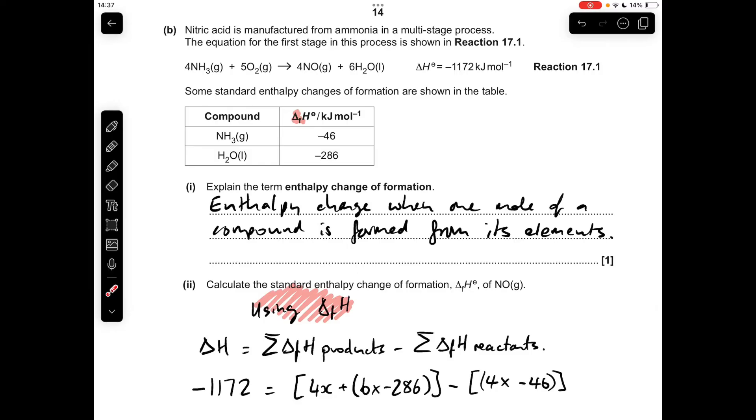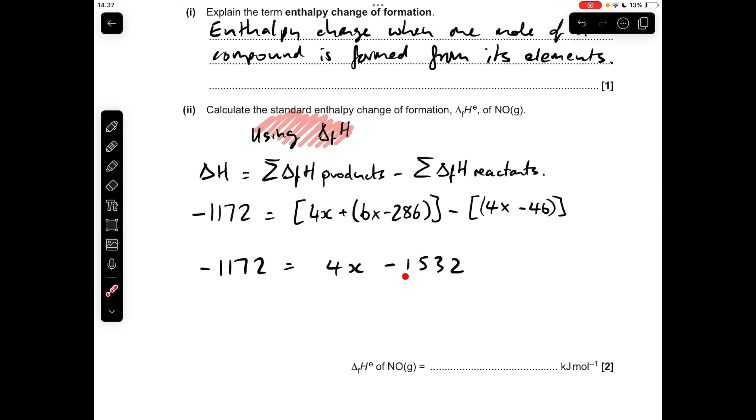That right-hand side tidies up to 4X - 1532. To get 4X on its own, we get that which gives us 4X = 360, so we just divide by 4 now to get the enthalpy change of formation for the NO.